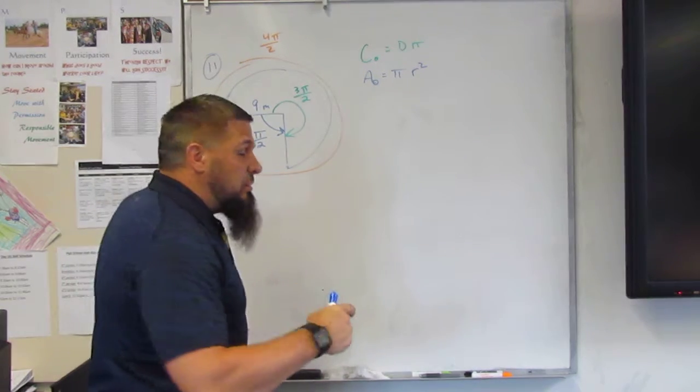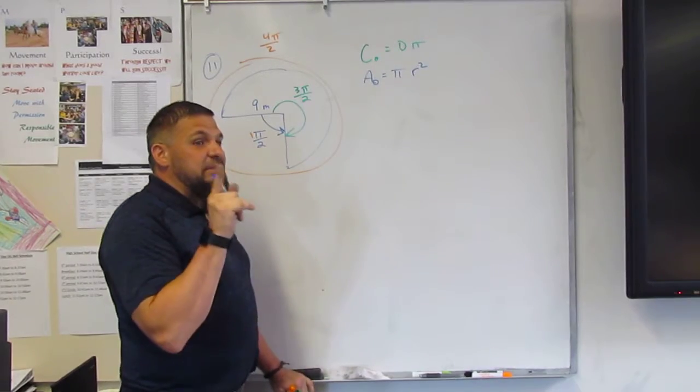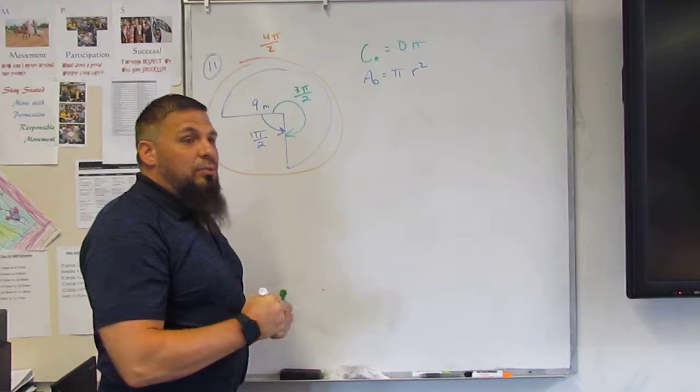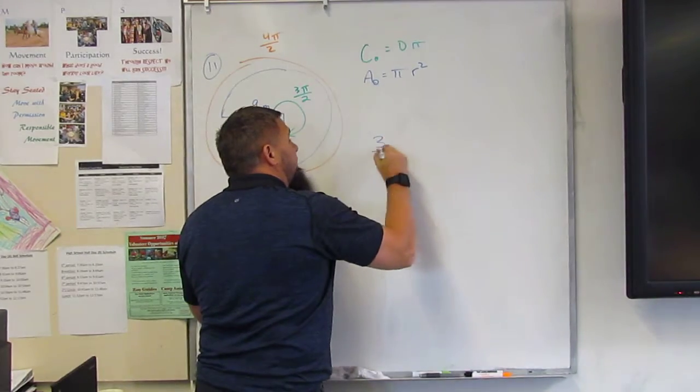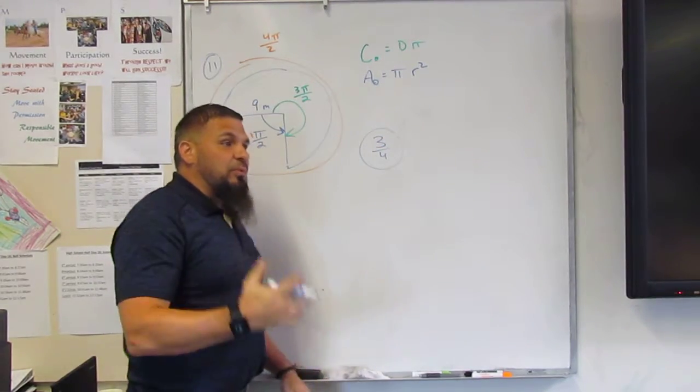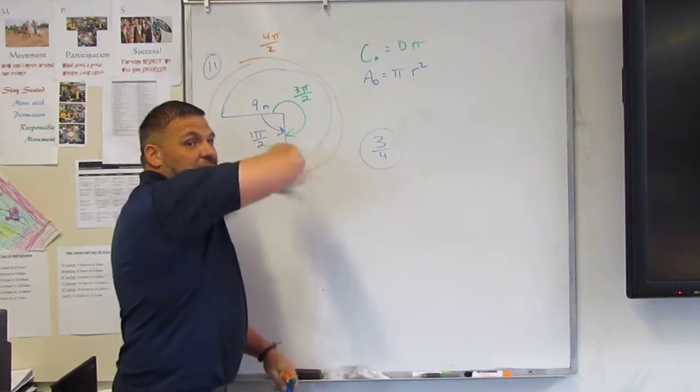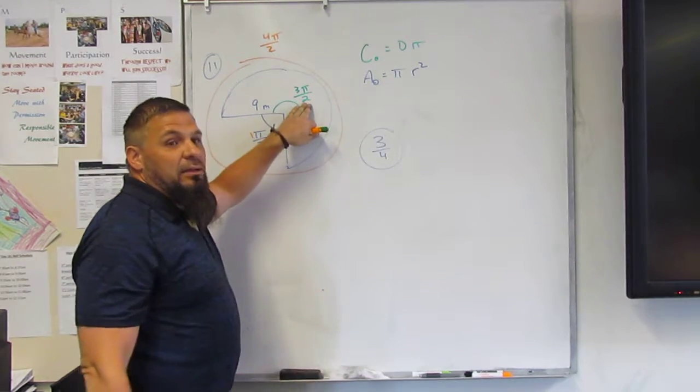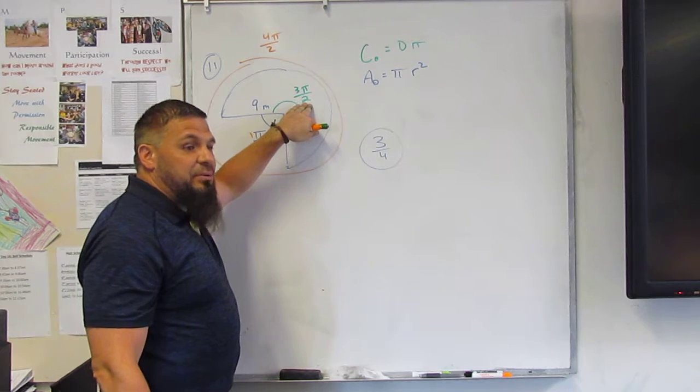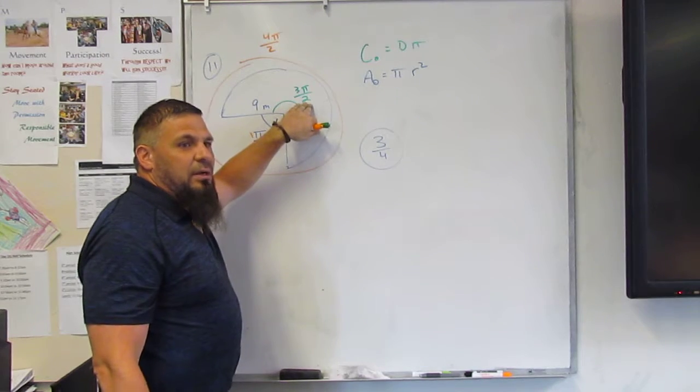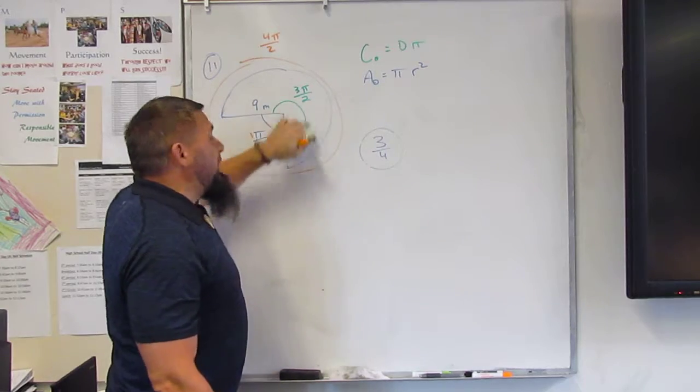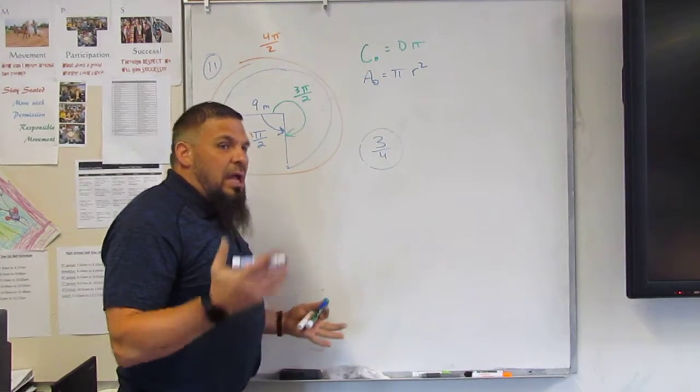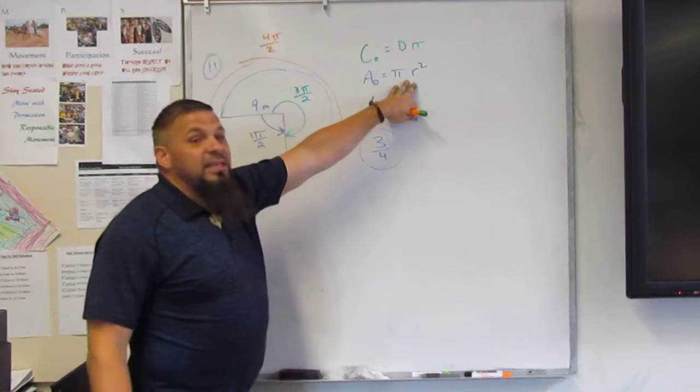This would be 3 over 4. In other words, 3 fourths of the circle. Yep. 3 fourths, because we double that gradient underneath the diameter, or the denominator. So this is 3 fourths, 3 pieces of the 4 pieces. Does that make sense? And it's 3 fourths of this.